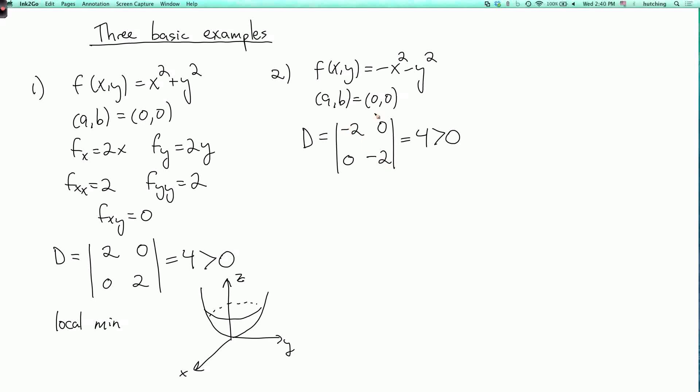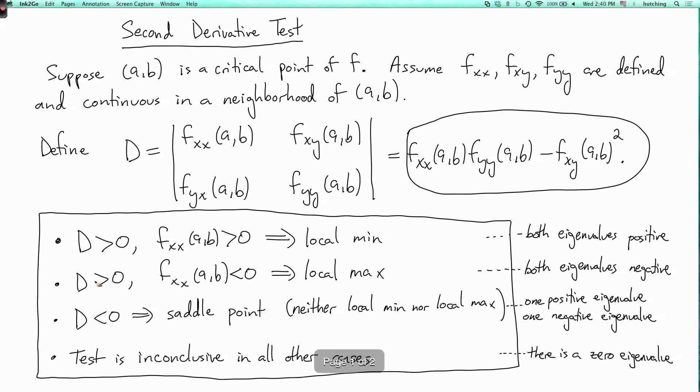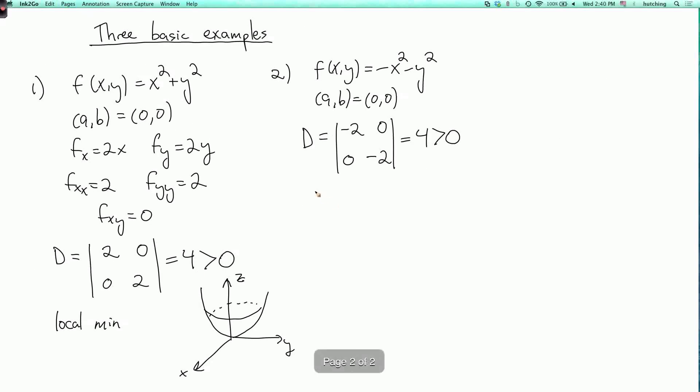So going back to the test, we see this is the second case, where the determinant is positive but fxx is negative. And so the test tells us that this is a local max, which of course it is, because if we draw out the picture of the graph, then it's an upside down paraboloid like this.